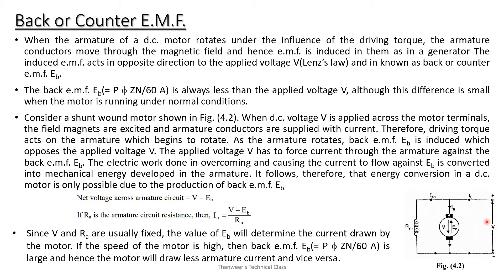The applied voltage V has to force current through the armature against the back EMF. The electric work done in overcoming and forcing the current to flow against the back EMF is converted into mechanical energy developed in the armature. Therefore, energy conversion in a DC motor is only possible due to the production of back EMF.